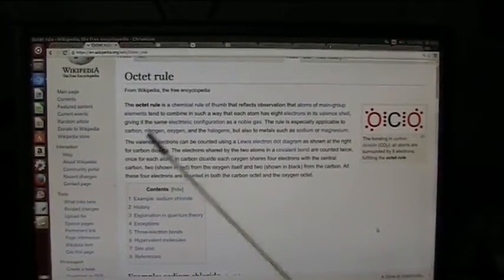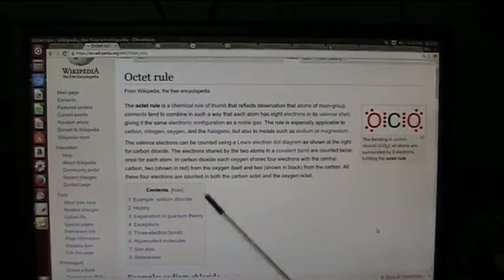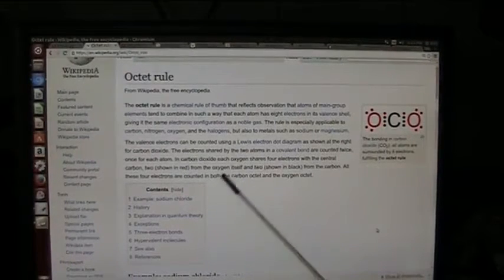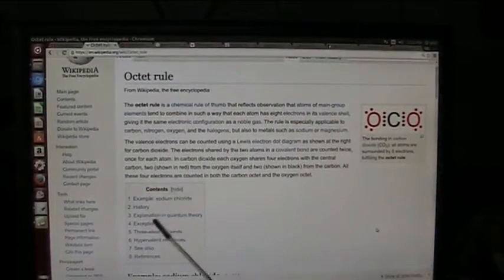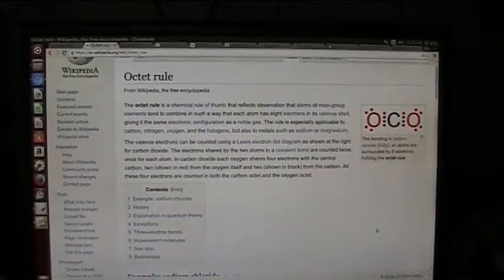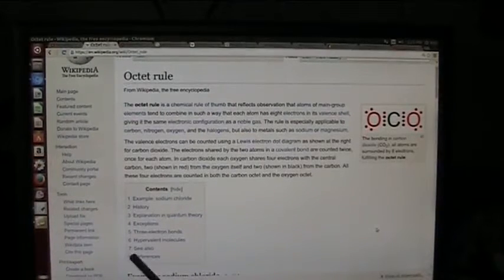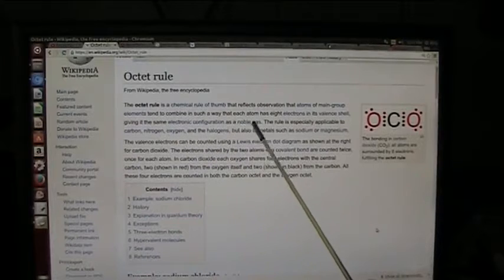Okay, this is the octet rule, which is a chemical rule that points to noble gases, and there's eight of them. I think there's seven or eight gases. But anyway, there's eight electrons in what they call a valence shell. It's a rule of eight, and there's eight of them, and that is the configuration of noble gas.